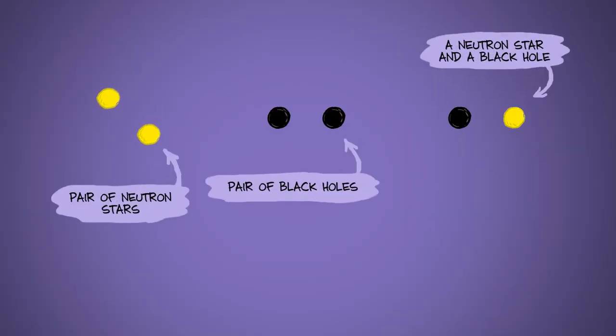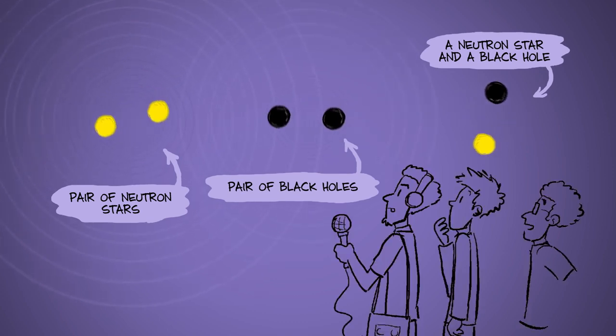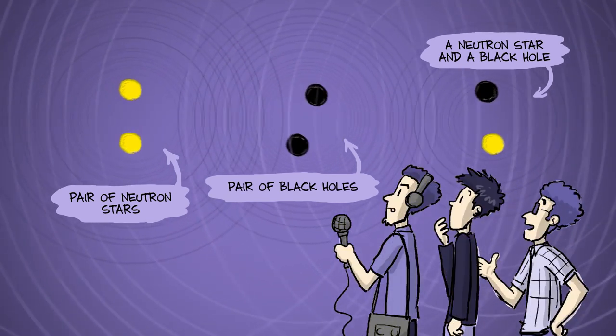Gravity is very weak in the scale of other forces in the universe, so you need something really, really massive moving very, very fast to make the big ripples that we can detect.